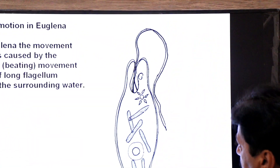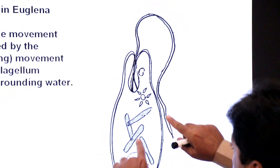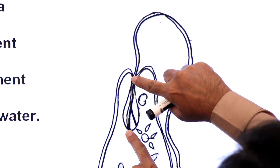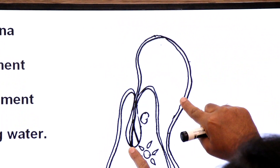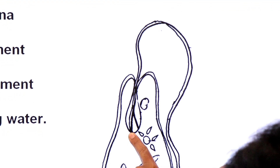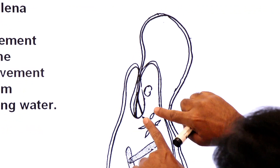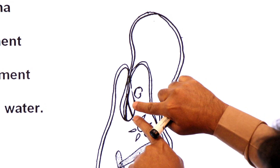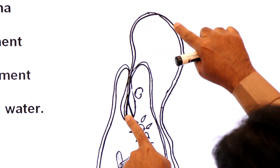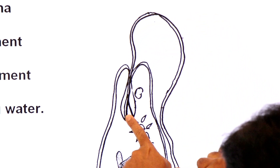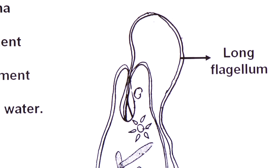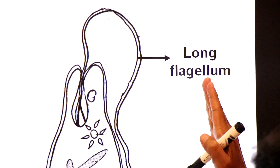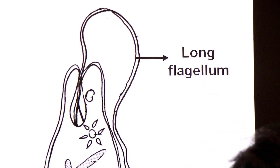Look at the diagram of Euglena. In Euglena there is an inward pocket called a reservoir, from which one long flagellum extends outward — this is called the emergent flagellum. One flagellum remains inside the reservoir and does not extend out — this is the non-emergent flagellum. The emergent flagellum is responsible for locomotion.